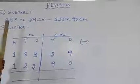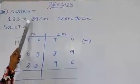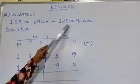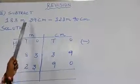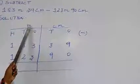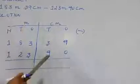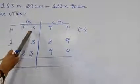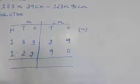So the next heading: subtract. 183 meter 39 centimeter subtract 123 meter 90 centimeter. Here also we have 2 units, meter and centimeter children. So I divide meter and centimeter column. You have centimeter 2 digits, so I place ones and tens place. Then meter has 3 digits: ones, tens, hundred. So you have to arrange like this.